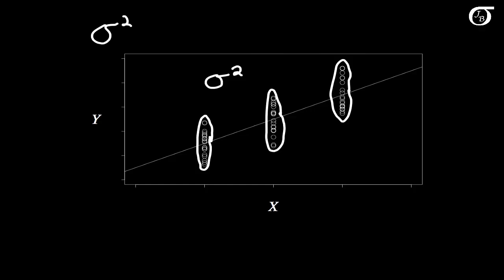Now sigma squared is a parameter whose value is typically unknown, and we're going to estimate that with sample data. And we're going to estimate that by s squared, s squared being the estimated variance of y at any given value of x.